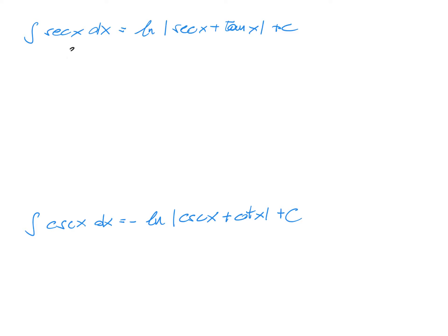Let's calculate the integral of secant of x dx. To do this, it's easiest to apply a trick by multiplying by 1 — but we take secant of x plus tangent of x, so we multiply and divide by this. The reason we do this is to apply substitution. Set u equal to secant of x plus tangent of x.